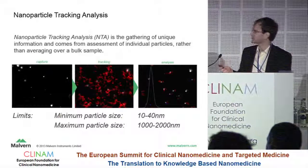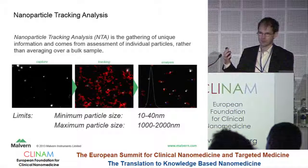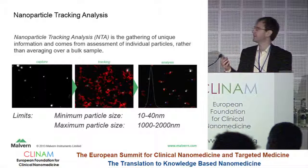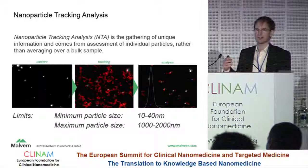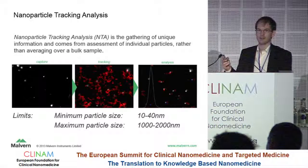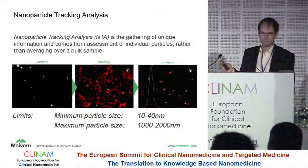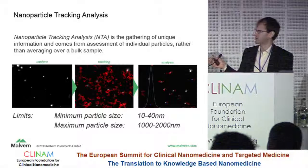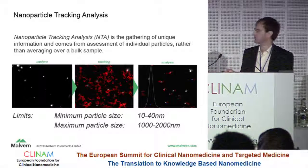We capture a video, record a video on a CCD or sensitive camera. We track the particles to see how fast they're moving, and then we analyze each track individually — so each particle's track is analyzed individually, and then we assign a size to that individual particle. The lower size limit is from about 10 nanometers for very brightly scattering materials like gold or silver, up to 40 nanometers for much weaker scatterers like silica or some of the very weak biological scatterers.